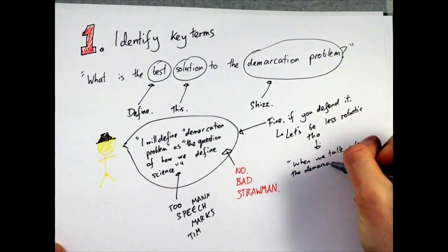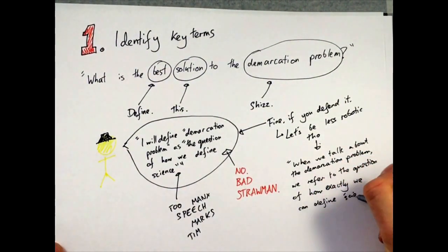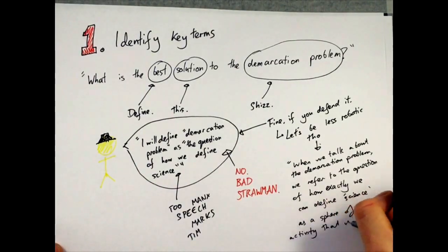Something like, when we talk about the problem of demarcation, we refer to the question of how exactly we can define science as a sphere of human activity which is somehow special will do just fine.